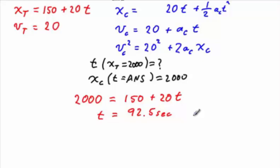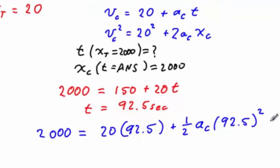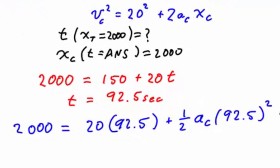Plugging in the 2,000 for x of the car, and the 92.5 for the time, we find the following expression. The only unknown in this expression is the acceleration of the car, and so we solve the algebra, yielding an acceleration of 0.035 meters per second squared.